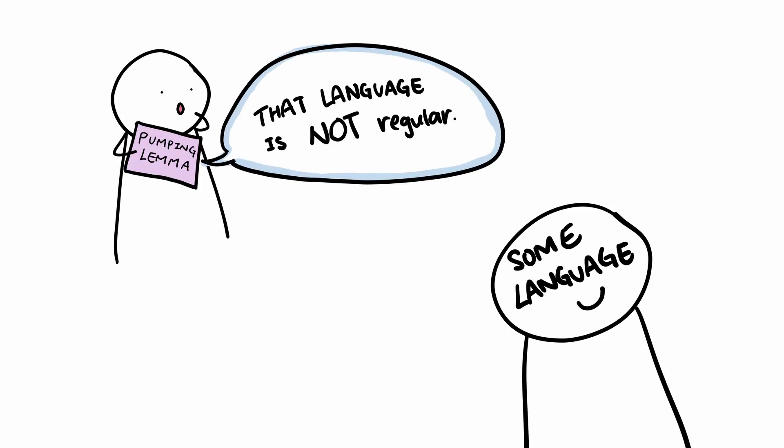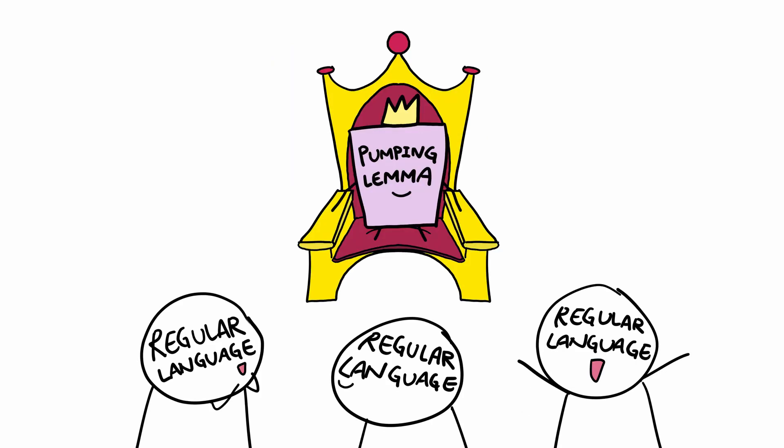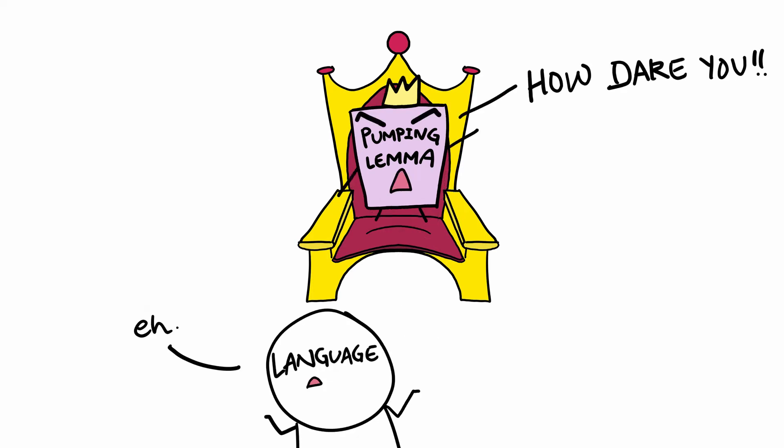So, how can we use the pumping lemma to prove that a language is not regular? Well, we know that every regular language must satisfy the pumping lemma, which means that if a language does not satisfy the pumping lemma, then it cannot be regular, and that language is instead a non-regular language.